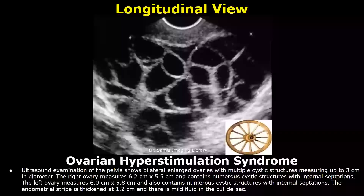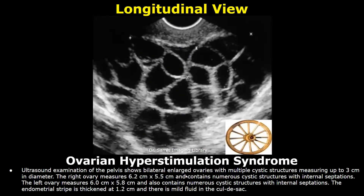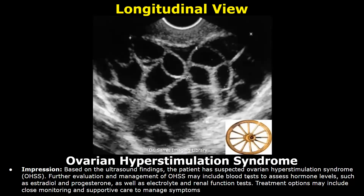This is a report for ovarian hyperstimulation syndrome. Both ovaries are enlarged with internal septations and multiple cystic structures. The endometrium was also thickened in this case and there was mild free fluid in the cul-de-sac. In the impression, the patient has suspected ovarian hyperstimulation syndrome, and then you can write about further evaluation and management.